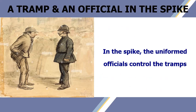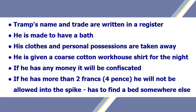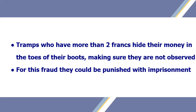Inside the spike, uniformed officials control the tramps. Each tramp's name and trade are written in a register. He is made to have a bath and his clothes and personal possessions are taken away. He is given a coarse cotton workhouse shirt for the night. If he has any money, it will be confiscated; if he has more than 2 francs, he will not be allowed into the spike and must find a bed elsewhere. Tramps who have more than 2 francs hide their money in the toes of their boots — for this fraud they could be punished with imprisonment.